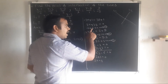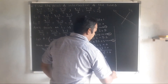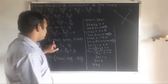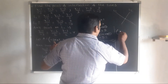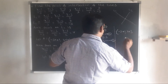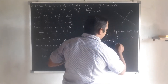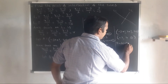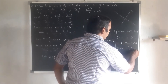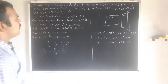Substituting s equal to minus 1 into equation 1: r plus (minus 1) equal to 0, so r equal to 1. Using r equal to 1 in the expressions for L1: x equal to minus 3(1) plus 1 equal to minus 2, y equal to 2(1) plus 2 equal to 4, z equal to 2(1) plus 3 equal to 5. Therefore the intersecting point is (minus 2, 4, 5).